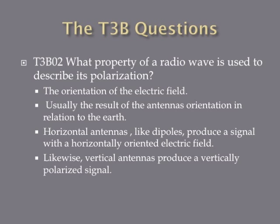What property of a radio wave is used to describe its polarization? The answer is the orientation of the electric field. This is usually the result of the antenna's orientation in relation to Earth. A horizontal antenna, like a dipole, produces a horizontally oriented electric field, while a vertical antenna produces a vertically polarized signal. This is an electric field, not a magnetic field — there is a question on the exam that says the orientation of the magnetic field, and that's wrong. To remember this, think of an electric light on a pole, like a street lamp, to differentiate it from a magnetic field.